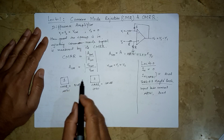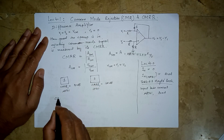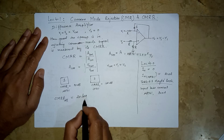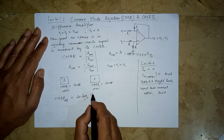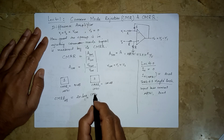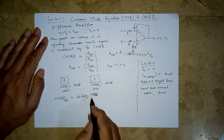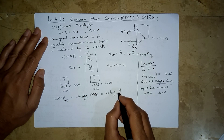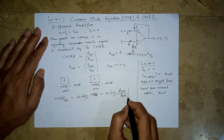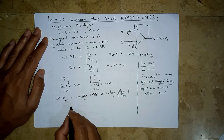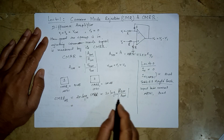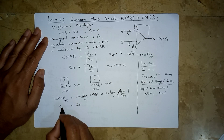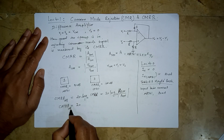Now, because CMRR values are large, there is another way of representing them in decibels. CMRR in dB is defined as 20·log₁₀ of the CMRR value — that is, |Adm| over |Acm|. The absolute value signs are used to signify that voltages can be negative; we are considering positive gain values.